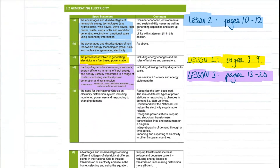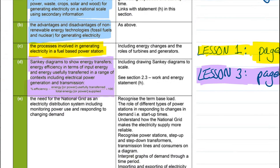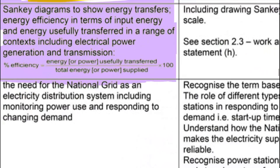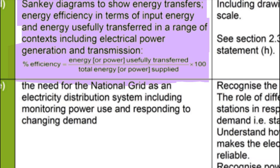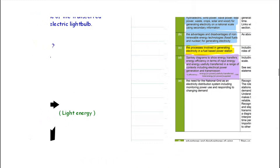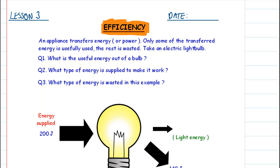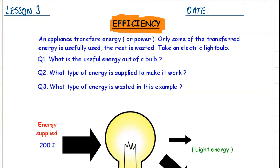In the spec, the statement is statement D and will be completed on pages 13 to 20. The statement talks about how you need to learn to use Sankey diagrams to show energy transfers, and you'll be using the percentage efficiency equation as we go through today's lesson. You would have learned about efficiency in Key Stage 3, so it's not a brand new concept, but we certainly need to review it in the context of electricity.